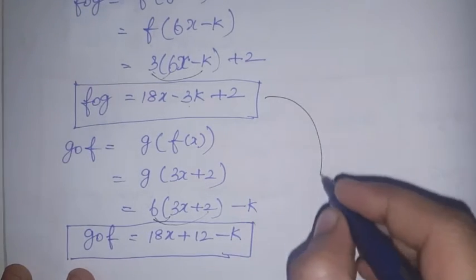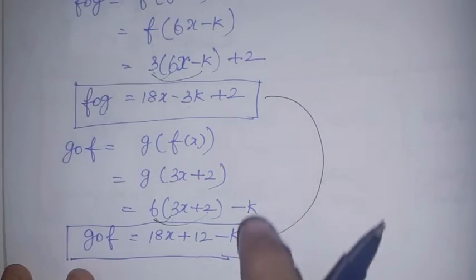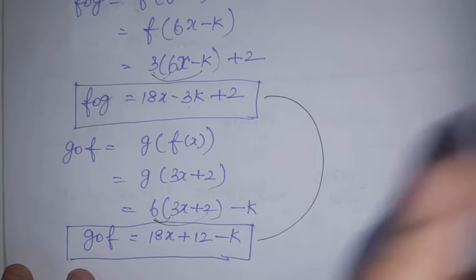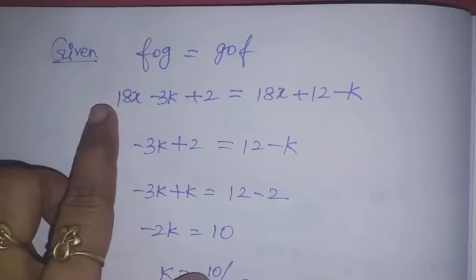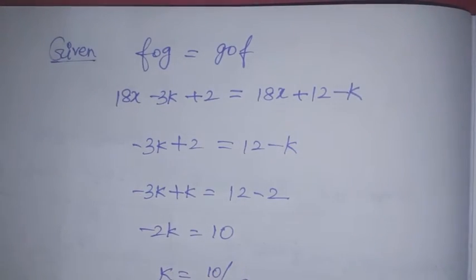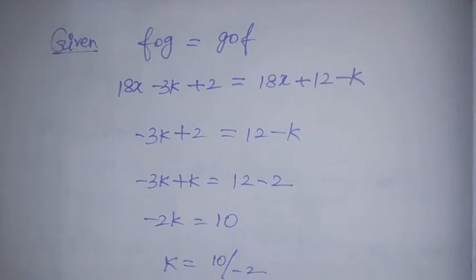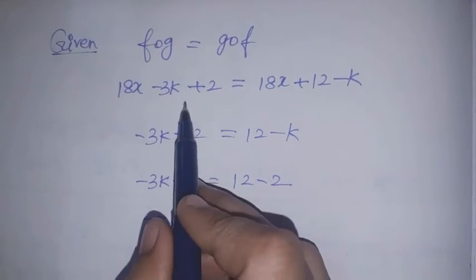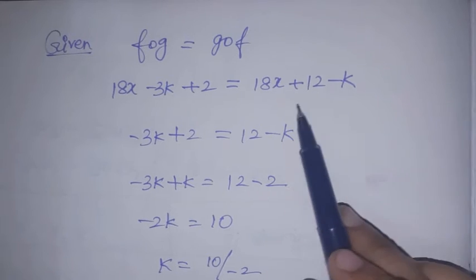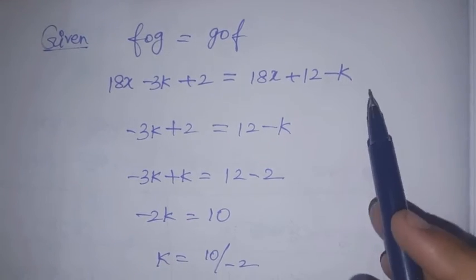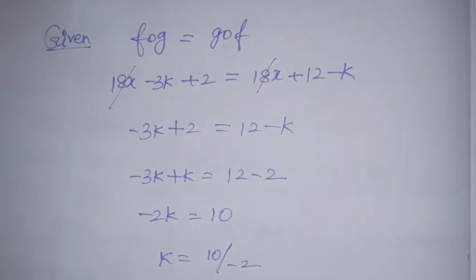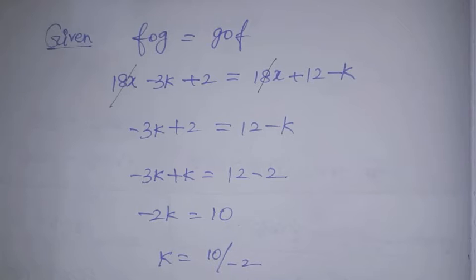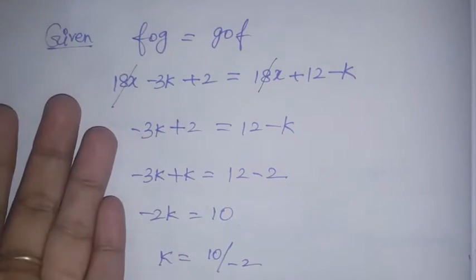Now the question says f∘g = g∘f, so we equate them: 18x - 3k + 2 = 18x + 12 - k. The 18x terms cancel on both sides.